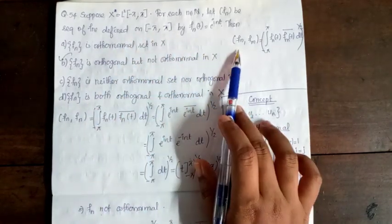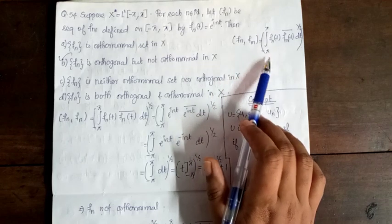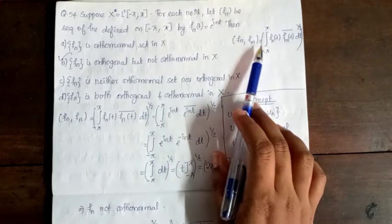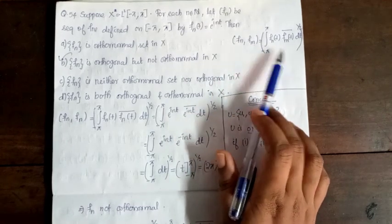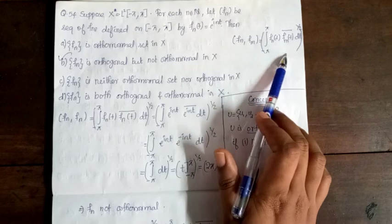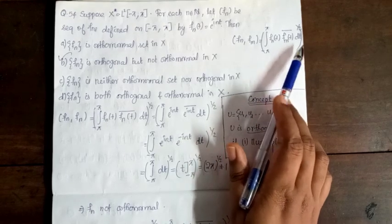In L²[−π, π], the inner product ⟨fn, fm⟩ = integral from −π to π of fn(t) into conjugate of fm(t) dt.